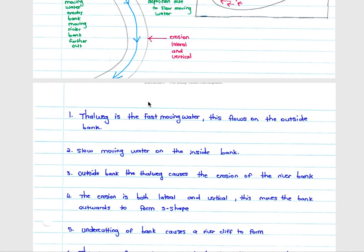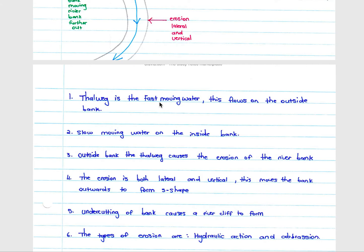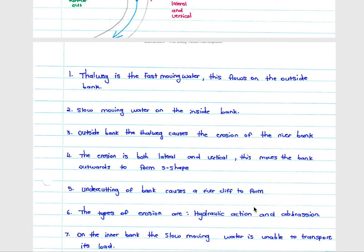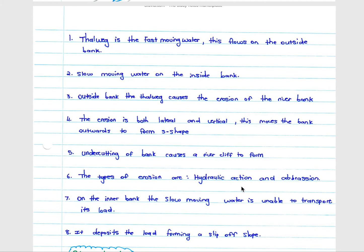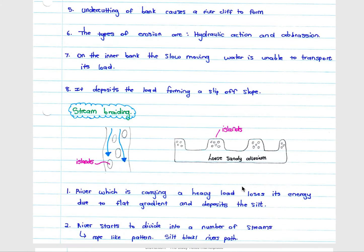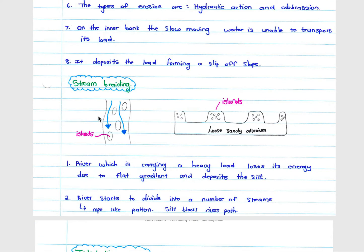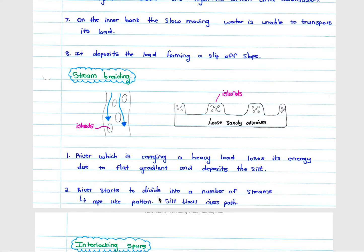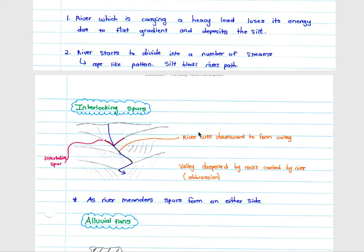On the inner bank, the slow-moving water is unable to transport its load and deposits it, forming a slip-off slope which contributes to the S-shape stream. Braiding occurs when a river carrying a heavy load loses energy due to a flat gradient and deposits silt, forming small islands. Water flows between these islands, dividing into a number of streams in a rope-like pattern, with silt blocking the river's path.